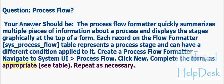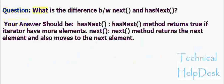Question: What is the difference between next() and hasNext()? hasNext() returns true if the iterator has more elements. next() returns the next element and also moves the pointer to the next element.